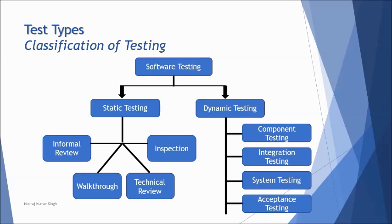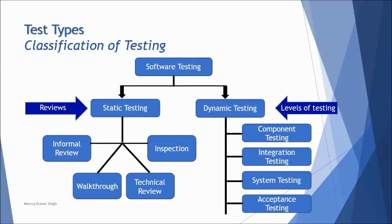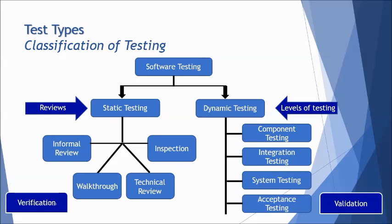There are many other non-functional levels, but they are not in scope for the foundation level. The approach of conducting static testing is called reviews, while dynamic testing is called levels of testing — component, integration, system, and acceptance. These four are also known as the functional levels of testing. Static testing can also be understood as verification, and dynamic testing as validation, which aligns with the V model — the left side is verification, and dynamically executing the application is validation.